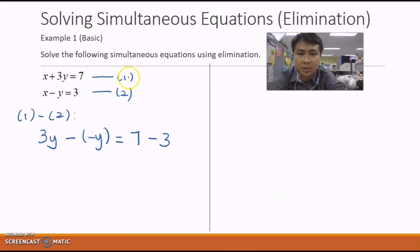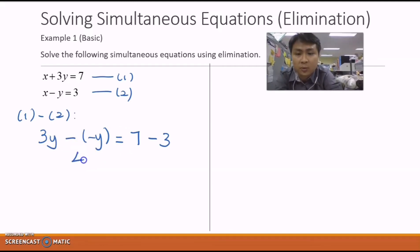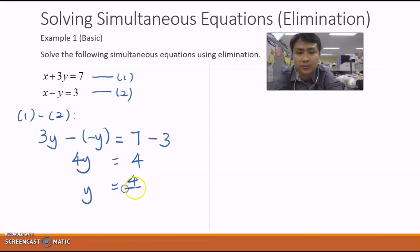Simplifying: 3y minus negative y becomes 3y plus y, which equals 4y. On the right side, 7 minus 3 equals 4. So 4y equals 4, and dividing both sides by 4 gives y equals 1.